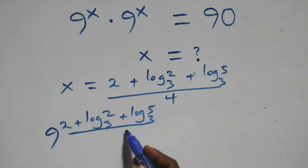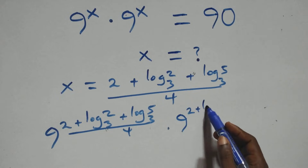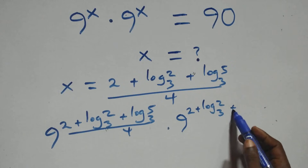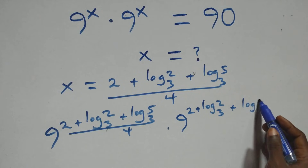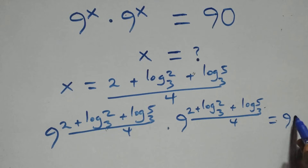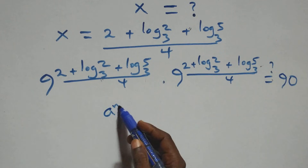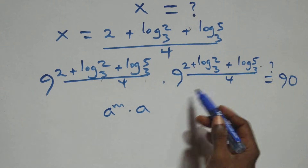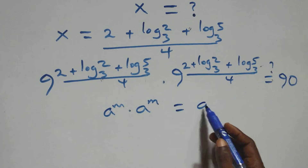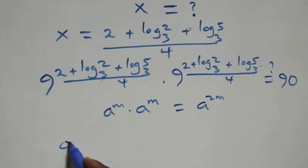Times 9 raised to the power of (2 plus log base 3 of 2 plus log base 3 of 5) over 4, equals to 90. Since we have the same base multiplying, a^m times a^m equals a^(2m), so we write this as 9 raised to the power of 2 times (2 plus log base 3 of 2 plus log base 3 of 5) over 4.